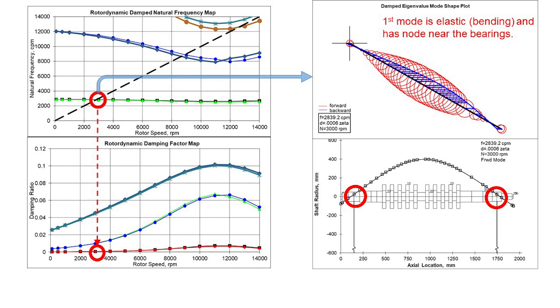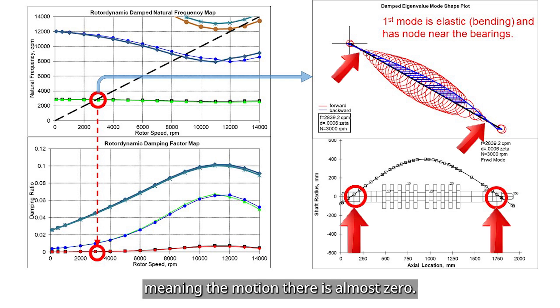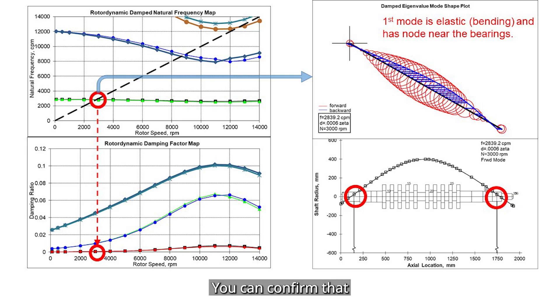Let's take a look at the first mode. There's a node point near the bearing, meaning the motion there is almost zero. That means the bearing is very stiff and does not allow much movement, which also means it does not contribute much damping. You can confirm that by looking at the damping ratio map again. This mode likely has low damping and could be more vulnerable.